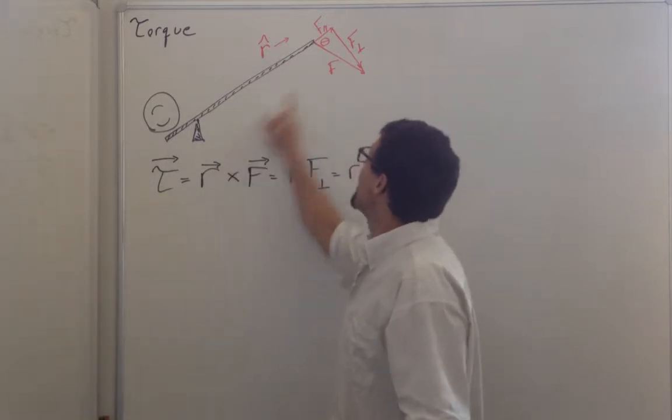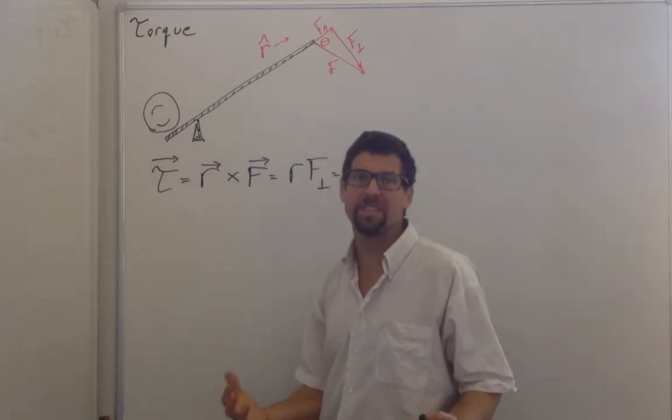Torque is a cross product, radius cross force gives me torque. So what does that mean?